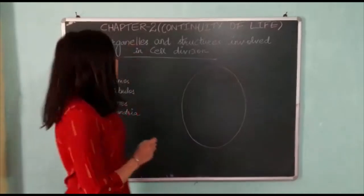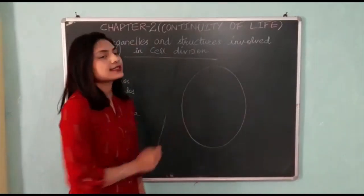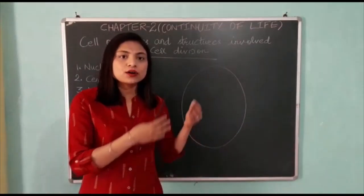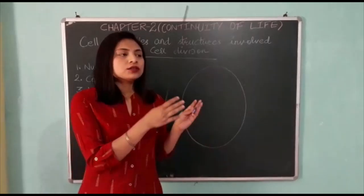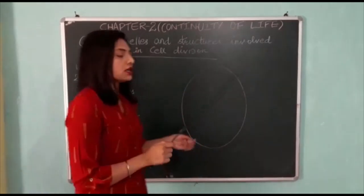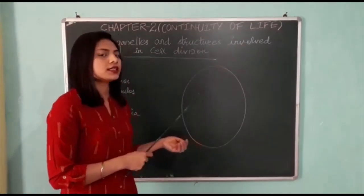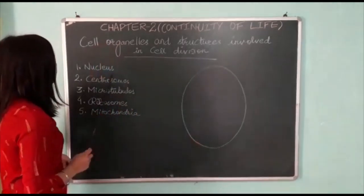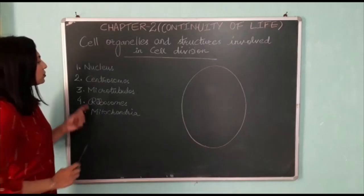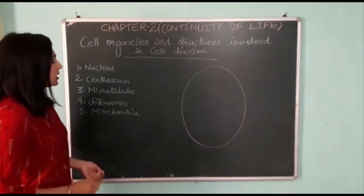Now we are going to talk about cell organelles and structures involving cell division. The most important cell organelles which are involved in cell division are the nucleus, centrosomes, microtubules, ribosomes, and mitochondria.